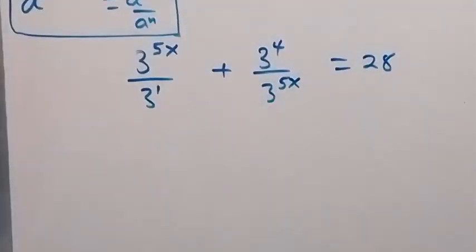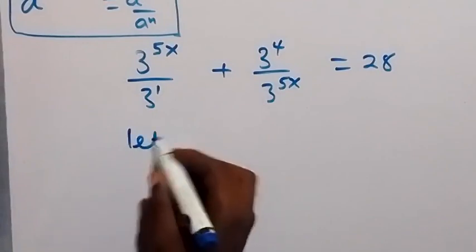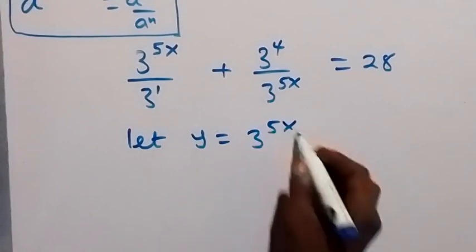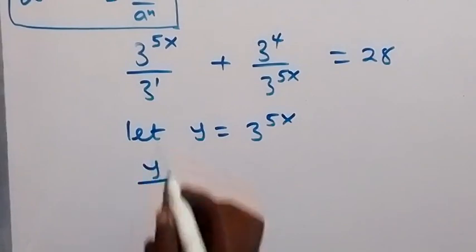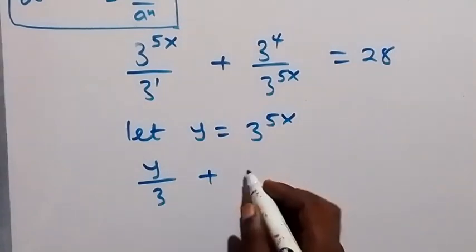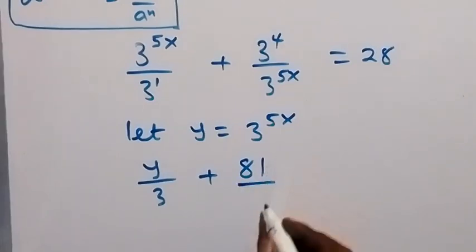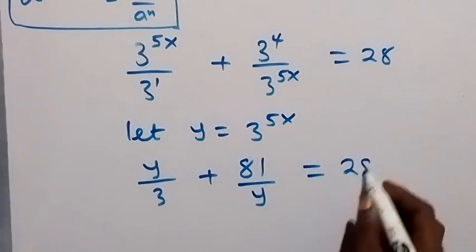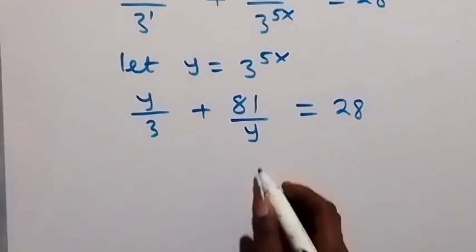From here, we take 3 raised to power 5x as common. Let y represent 3 raised to power 5x to make our work easier. So we now have y over 3, plus 3 raised to power 4 — that is 3 times 3 times 3 times 3, which is 81 — over y, which equals 28.